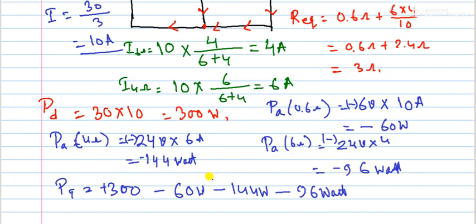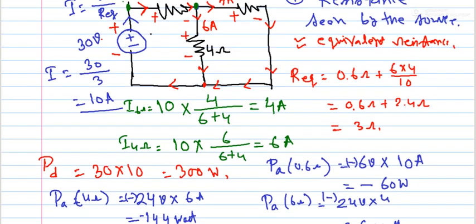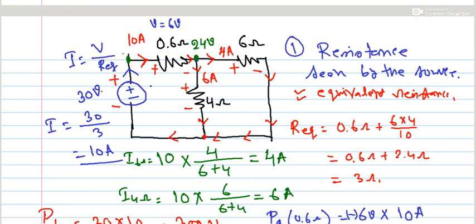Total power: the sum should equal zero according to energy conservation law. 300 watts delivered minus 60 watts minus 144 watts minus 96 watts equals zero. This verifies our calculations are correct.